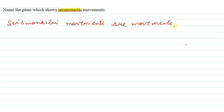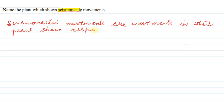Seismonastic movements wo movements hain jis mein ki ek plant response deta hai on receiving a stimulus. Seismonastic movements are movements in which plants show a response to any type of external stimulus. Jaise hi wo koi stimulus receive karte hain, wo waise hi ek response show karte hain.